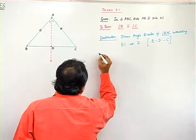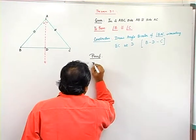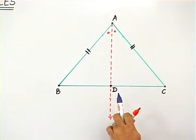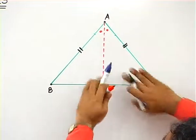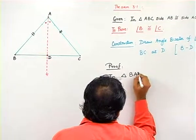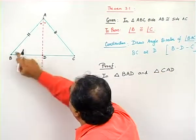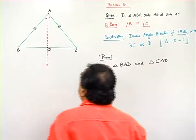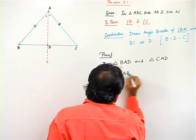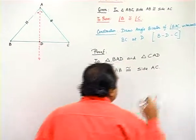We shall now start with the proof. So we will say, in triangle - now look at this, what has happened is, when you have drawn this angle bisector, this whole triangle has been divided into two smaller triangles. So we will say, in triangle BAD and triangle CAD. We will say, side AB congruent to side AC. And what is the reason? Given.